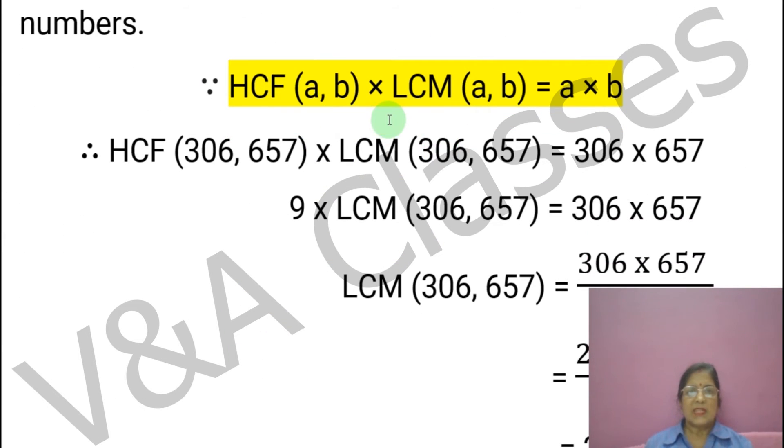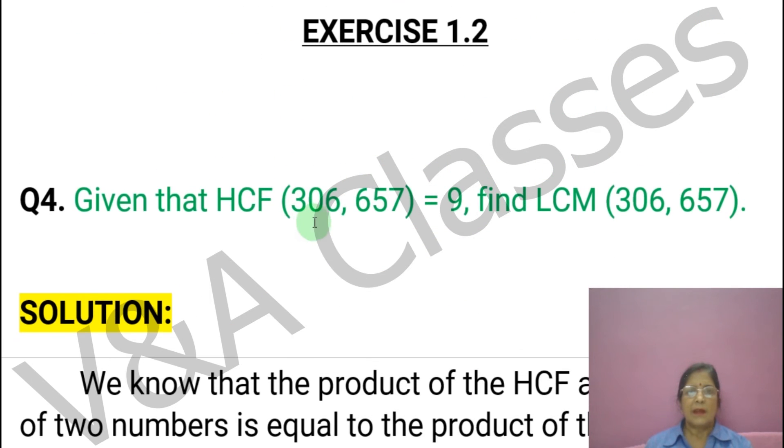So, we will use this formula to put the value. Therefore, HCF of 306 and 657 multiplied by LCM of 306 and 657 equals to 306 multiplied by 657, because we have two numbers.